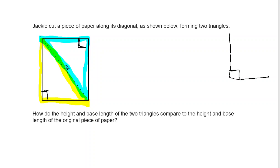Going up here, that's also a right angle — and that's the right angle I would use to calculate the area of each triangle. Here's a base and here's a height, because it makes this right angle. And here's a base and here's a height, making this right angle. As we notice, that's the same base and height as the original piece of paper.